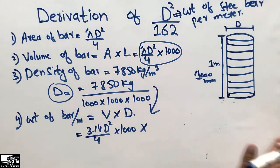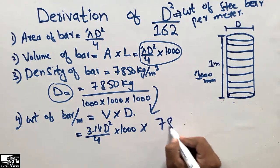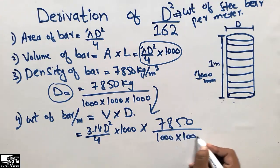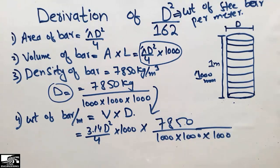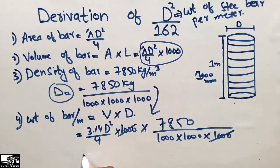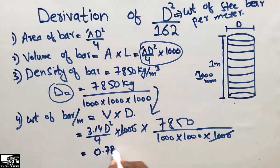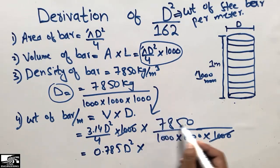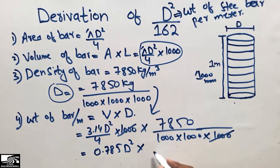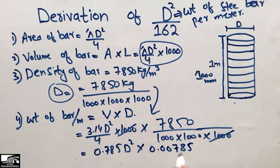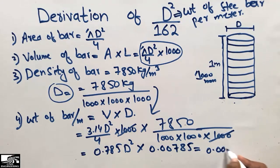Writing out the formula: density is 7850 divided by 1000³, multiplied by the volume. Canceling one thousand with one thousand, we simplify. π/4 gives 0.785, and 7850 divided by (1000 × 1000) gives 0.00785. Multiplying these two values together gives 0.00000617 × D², which simplifies to 0.00617 D².